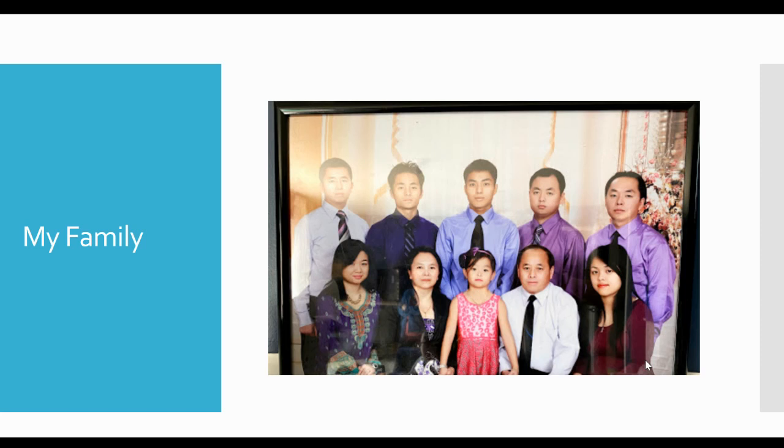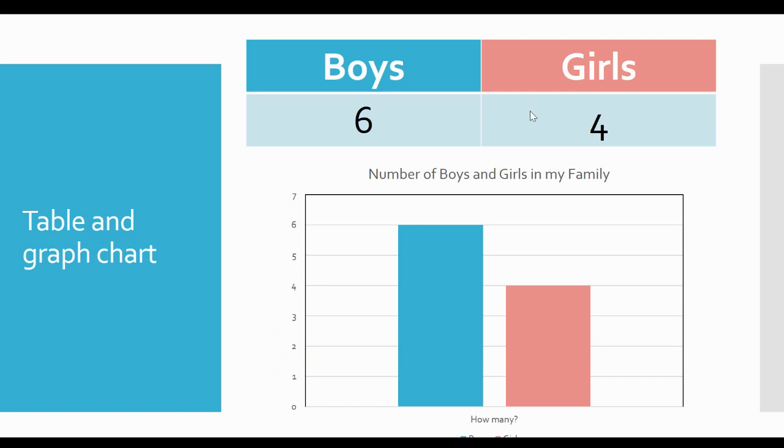Four girls are in my family. So now I'm going to make a table chart and a graph chart. The table chart is showing how many boys and girls are in my family. So in the first column, I wrote boys, and the number under that is six, because there are six boys in my family.